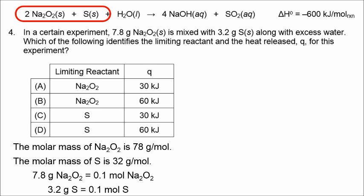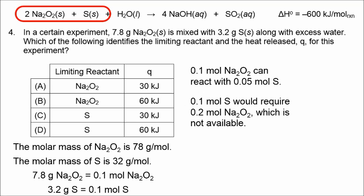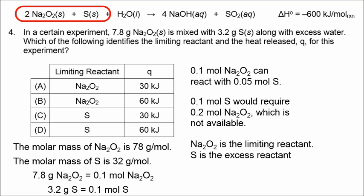There's a 2 to 1 mol ratio in the balanced chemical equation. For every 1 mol of sodium peroxide that reacts, a half mol of sulfur reacts with it. If we have 0.1 mol of sodium peroxide, that can react with 0.05 mol of sulfur. For all the sulfur to react, we would need 0.2 mol of sodium peroxide. Since that amount is not available, sodium peroxide (Na2O2) is the limiting reactant, and sulfur is the excess reactant.